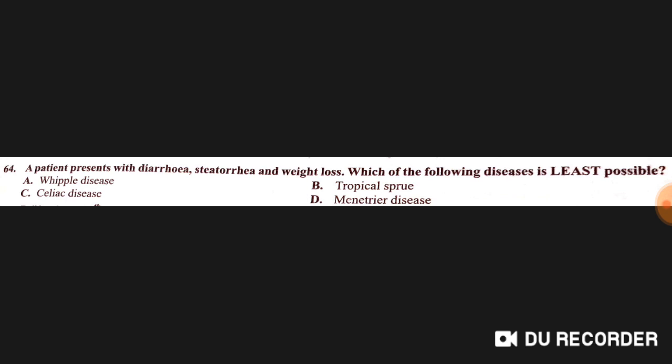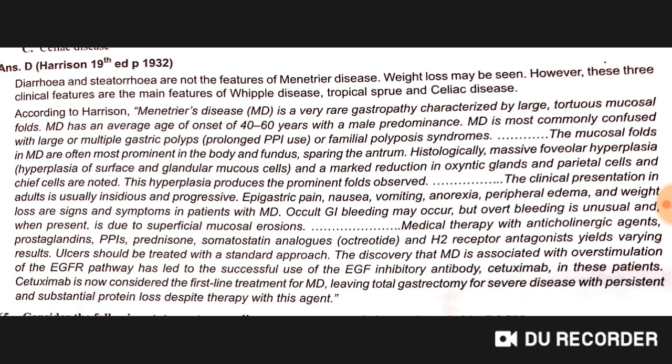A patient presents with diarrhea, steatorrhea, and weight loss — which disease is least possible? Whipple's disease, tropical sprue, and celiac disease are possible, but Menetrier's disease is not. Menetrier's disease is a very rare gastropathy characterized by large tortuous mucosal folds with onset at 40 to 60 years.